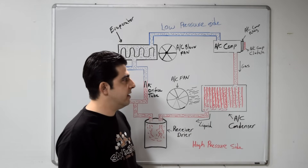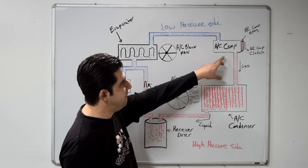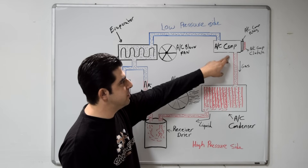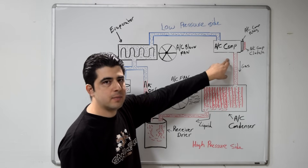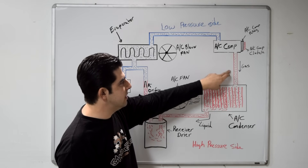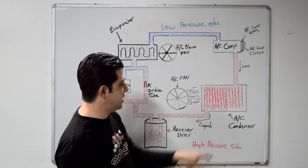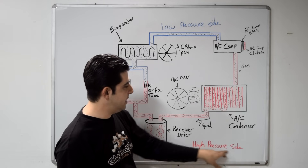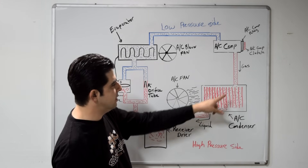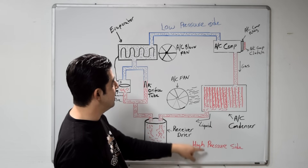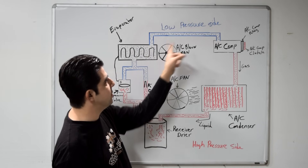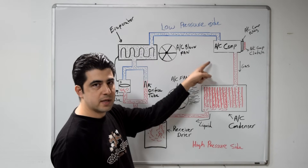I should also mention that after the refrigerant leaves your AC compressor, it's going to be on the high-pressure side, which I have in red on the diagram. Everything in red is your high-pressure side, and everything in blue is your low-pressure side.